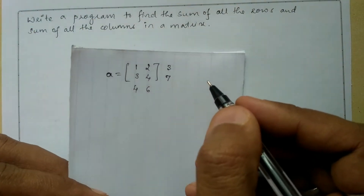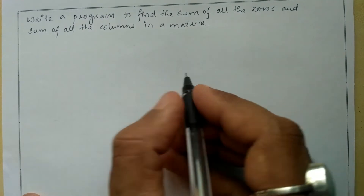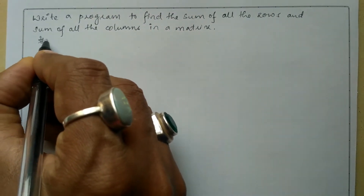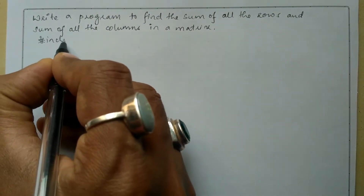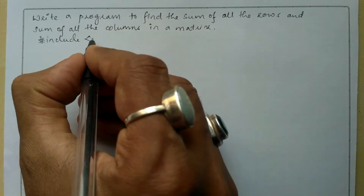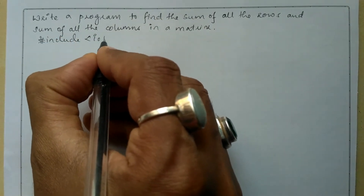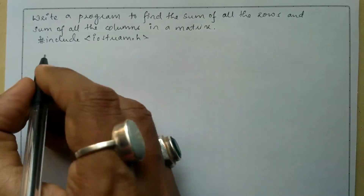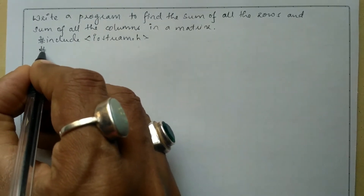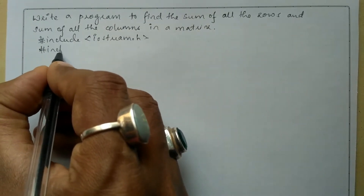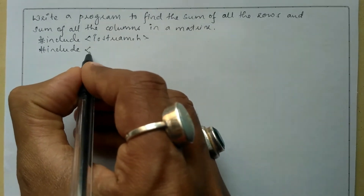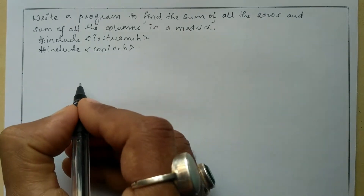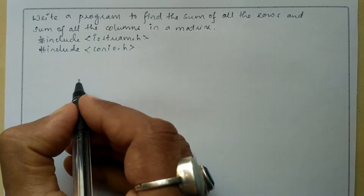This is how we need to write the program. Let us write the preprocessor directives. I will write hash include in angular brackets: iostream.h header file. The second preprocessor directive is hash include in angular brackets: conio.h header file.